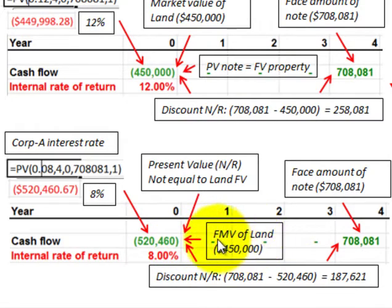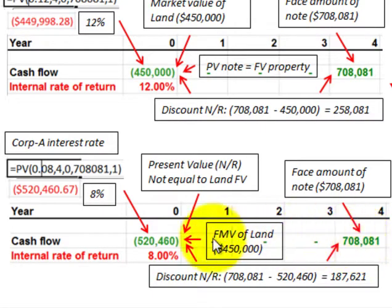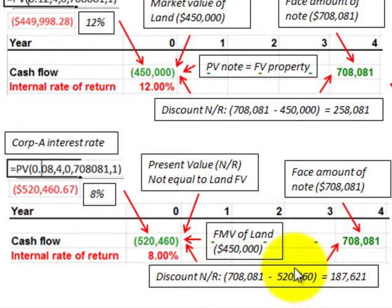Since those aren't equal, we'd violate our rules. Looking at the cash flow again — at issuance and four years out, the face amount of the note is $708,081 — plugging it into our calculator, we come up with 8% as the internal rate of return. So with our investment at $520,460 and the face amount at $708,081, we get an internal rate of return of 8%, which equates to the present value used at 8%. The discount on this note receivable would be $708,081 less $520,460, giving a difference of $187,621.